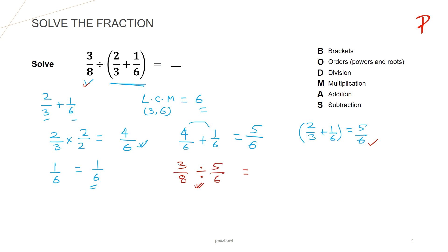Whenever we are dividing two fractions, we write the first fraction as it is. At the place of division, we write multiplication and we invert the second fraction — so 5 upon 6 becomes 6 upon 5. Division is converted to multiplication and the fraction after division is inverted. We reversed numerator and denominator.